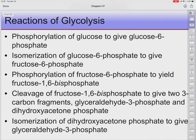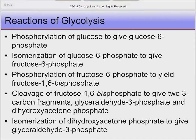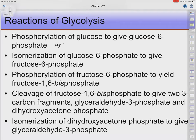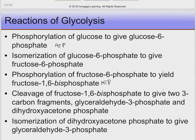Let's run through the reactions. Glucose gets phosphorylated into glucose 6-phosphate. Then we isomerize — glucose 6-phosphate becomes fructose 6-phosphate. We phosphorylate that again, which costs ATP, and fructose 6-phosphate becomes fructose 1,6-bisphosphate. Cleavage of fructose 1,6-bisphosphate gives us two three-carbon fragments: glyceraldehyde 3-phosphate, which is what we want, and dihydroxyacetone phosphate, which isn't. So we isomerize the dihydroxyacetone phosphate into glyceraldehyde 3-phosphate. At the end of these first five reactions, we have two molecules of glyceraldehyde 3-phosphate.